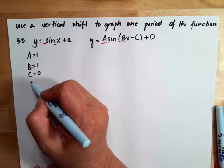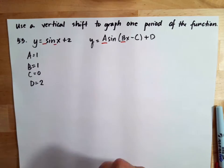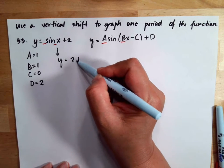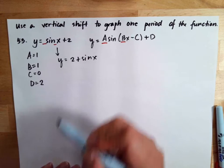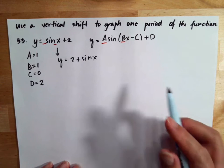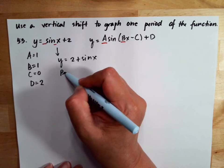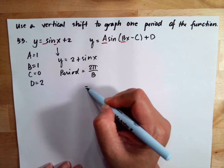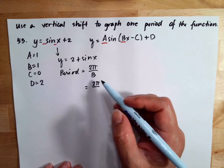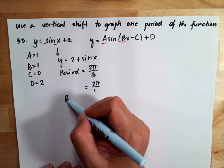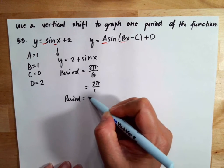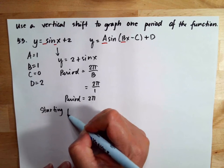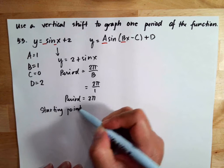Then d is equal to two, so sometimes this is written as y is equal to two plus sine x — it's the same. Now our period is equal to two pi over b, which is two pi over one, so the period is equal to two pi.